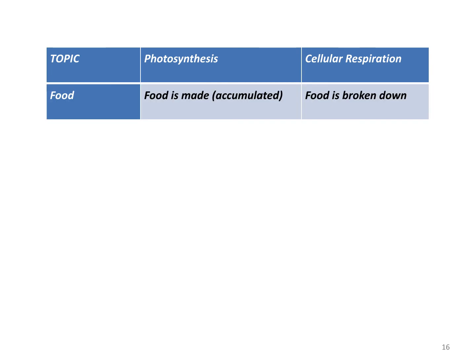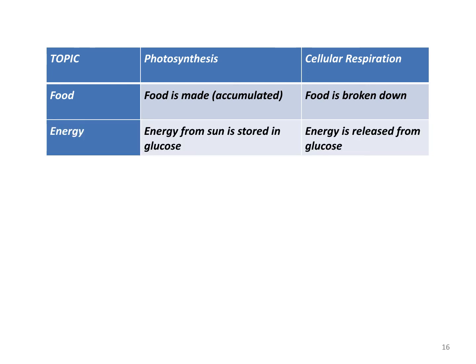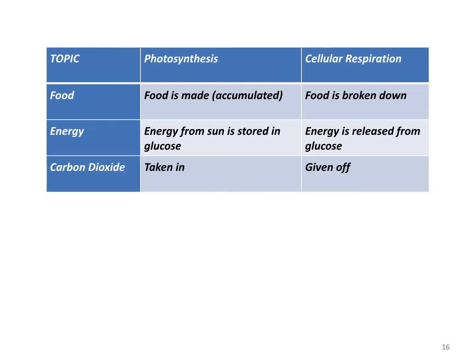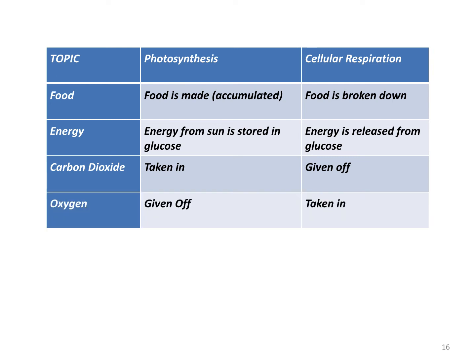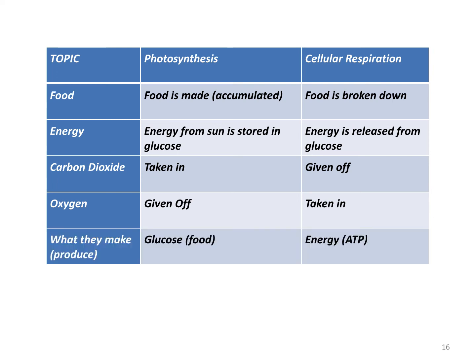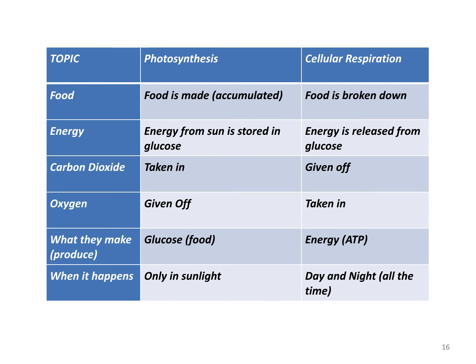We're going to look at the chart in stages. First row is food: in photosynthesis food is made — also called accumulated — and in cellular respiration food is broken down. With energy: energy from the sun is stored in glucose in photosynthesis, and then in cellular respiration energy is released from the glucose. Carbon dioxide in photosynthesis is taken in, and in cellular respiration it's given off. Oxygen in photosynthesis is given off, but in cellular respiration it's taken in. In photosynthesis they are making glucose, and in cellular respiration you are making energy. Photosynthesis only happens in sunlight, and cellular respiration happens all the time, day and night.